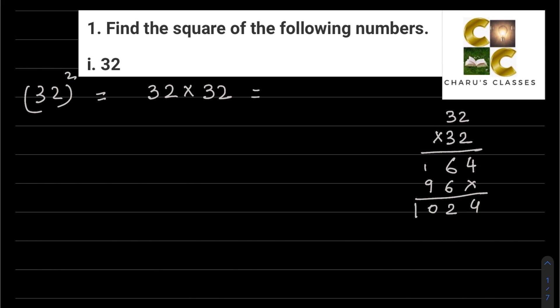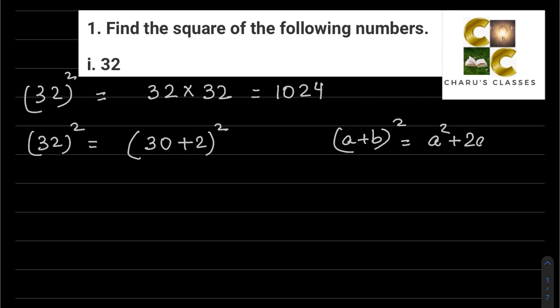This is coming as 1024. But if you have seen the NCERT book, in Exercise 6.2, before the exercise, the example given shows the square of a number using the identity. So let's try it that way as well, because many teachers want you to do it using the identity. 32 squared - we can write 32 as 30 plus 2, whole squared. Now the identity we use here is: